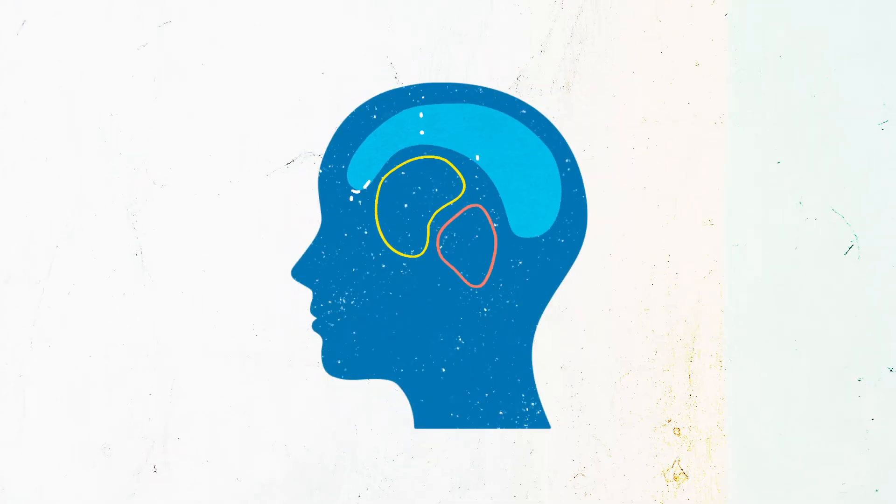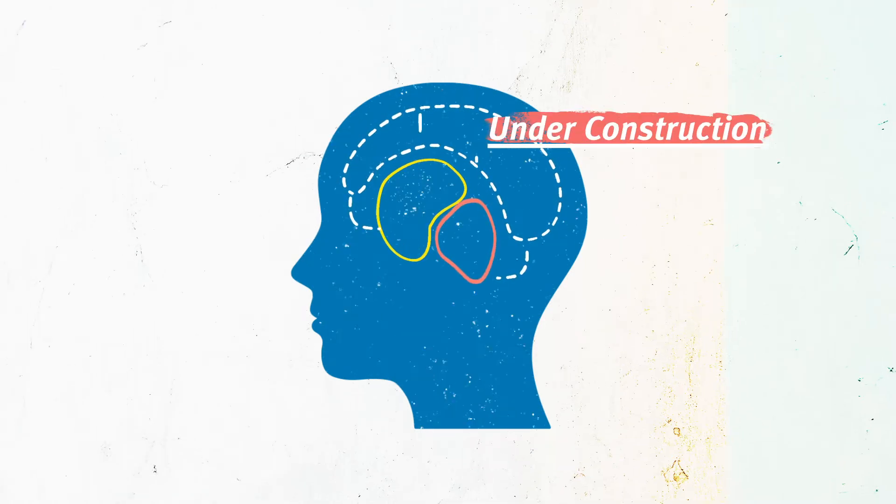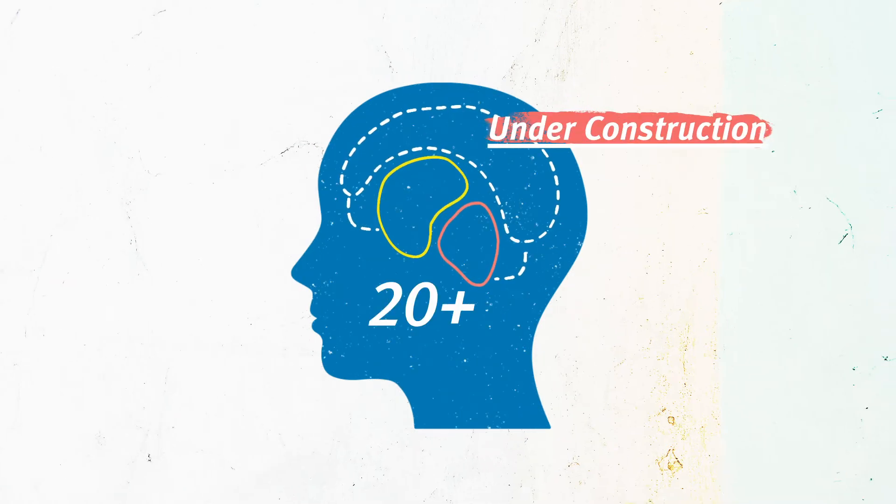And then the last brain is one that's going to control your emotions, understand consequences. That part of the brain is not really going to be constructed or online until well into your twenties.